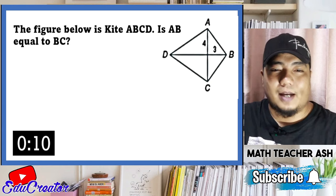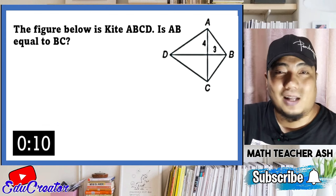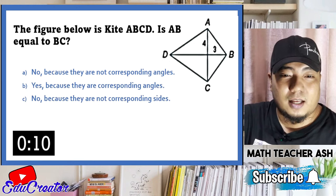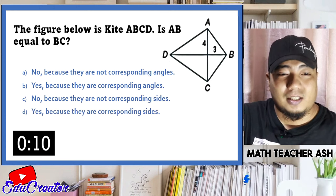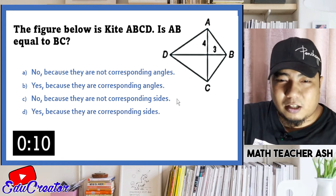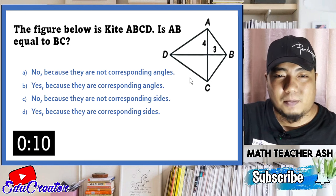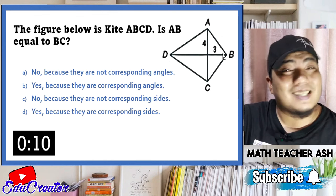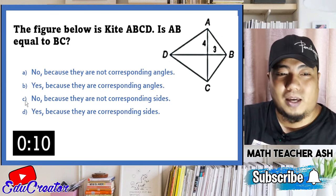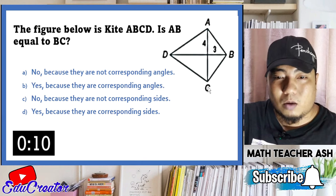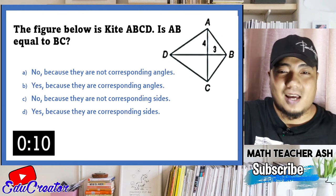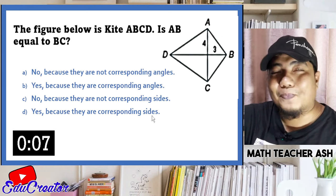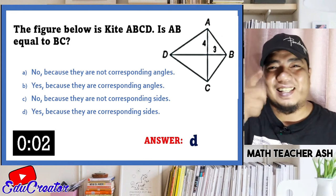The figure below is kite ABCD. Is AB equal to BC? Is it A no, because they are not corresponding angles; B yes, because they are corresponding angles; C no, because they are not corresponding sides; or D yes, because they are corresponding sides? Since the question talks about sides, options A and B are wrong. AB and BC are consecutive sides of the kite, so they are equal. The correct answer is letter D — yes, because they are corresponding sides.